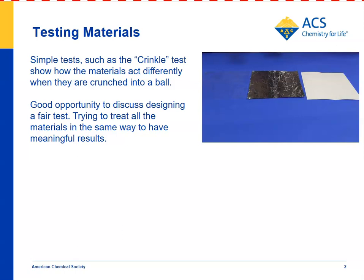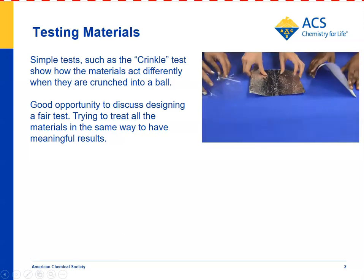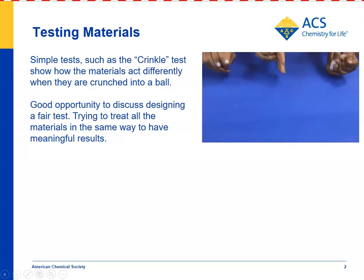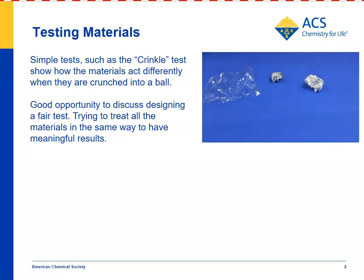Then they'll do a simple test. We're going to show the crinkle test, where they take each piece of material, crunch it up into a ball, and then put it down and see how it reacts. The plastic unfolds really quickly, the aluminum foil stays together, and the paper is sort of in between — it'll unfold a bit, but not nearly as much as the plastic.